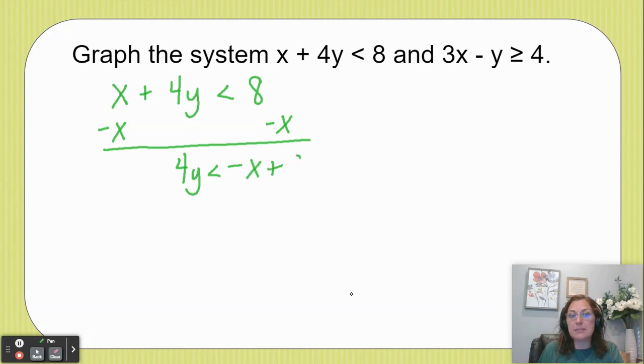Then I'm going to divide by 4 on every term, which gives me y is less than negative one-fourth x plus 2.